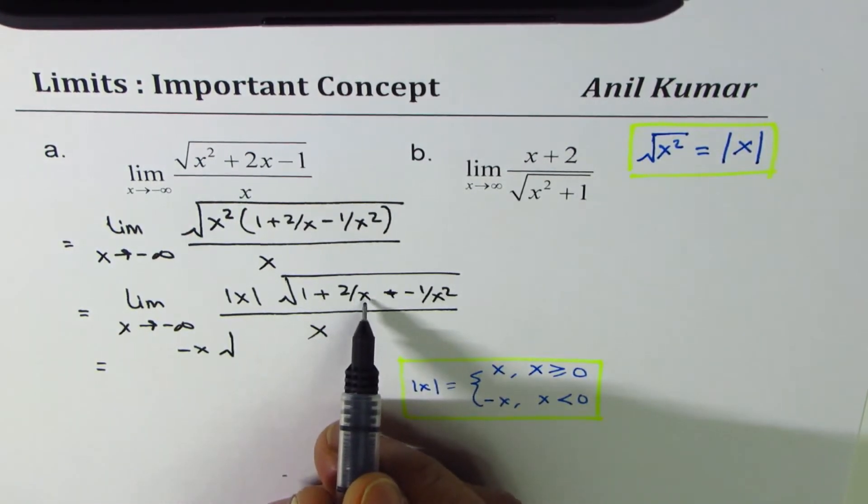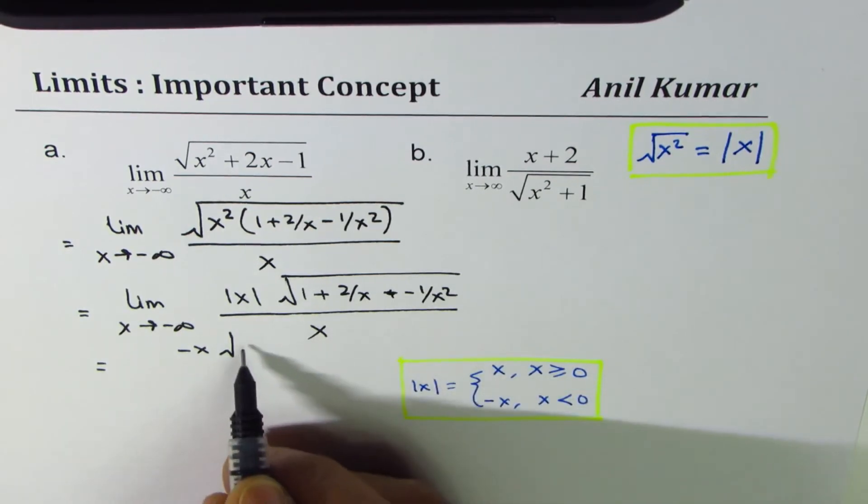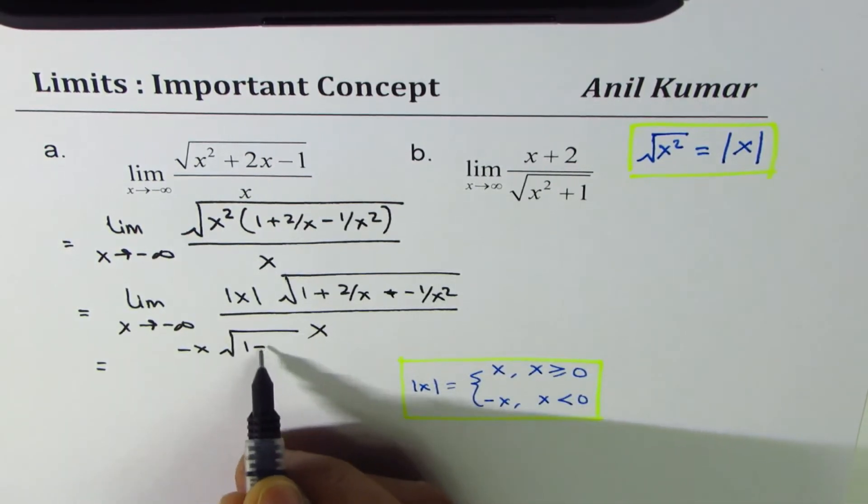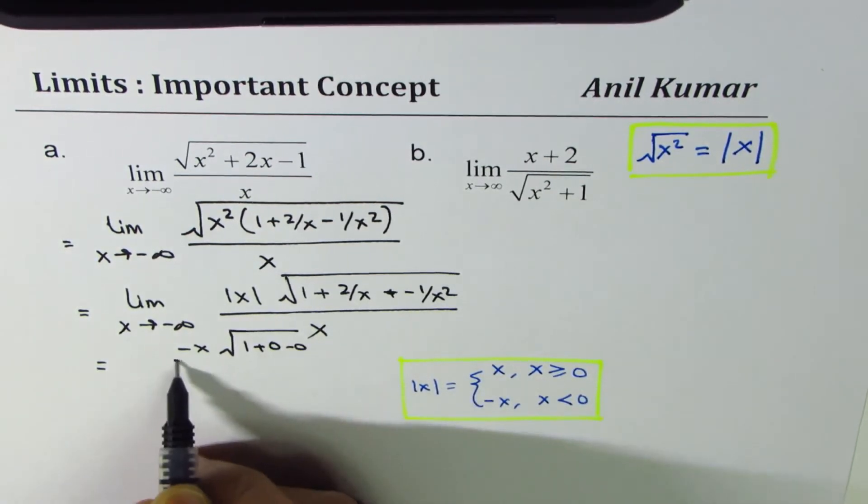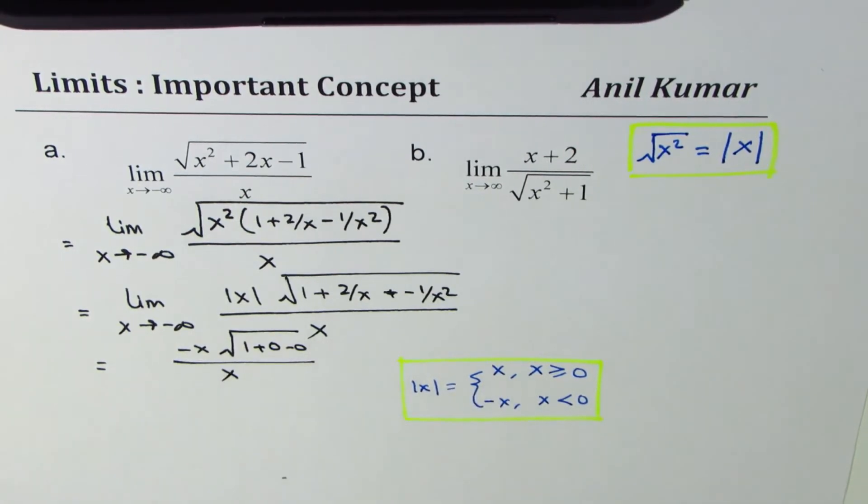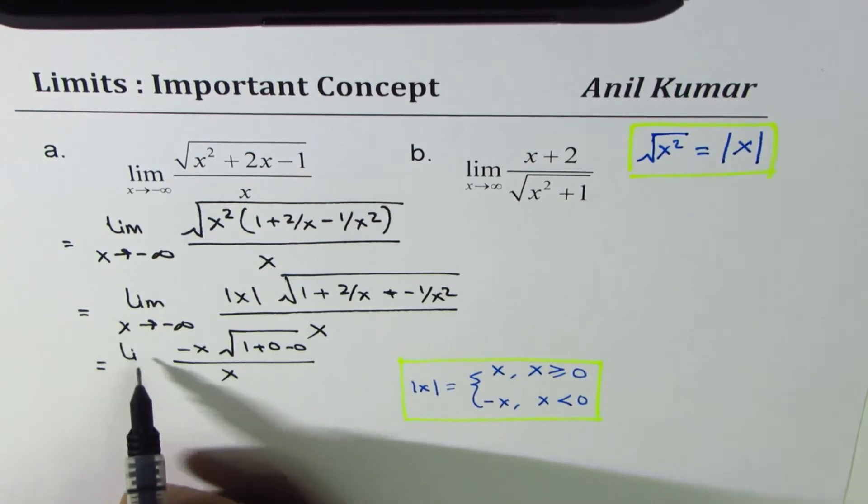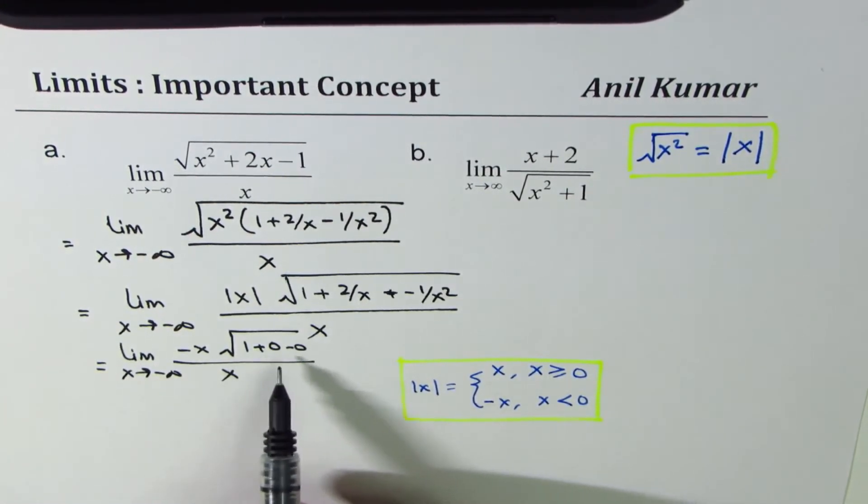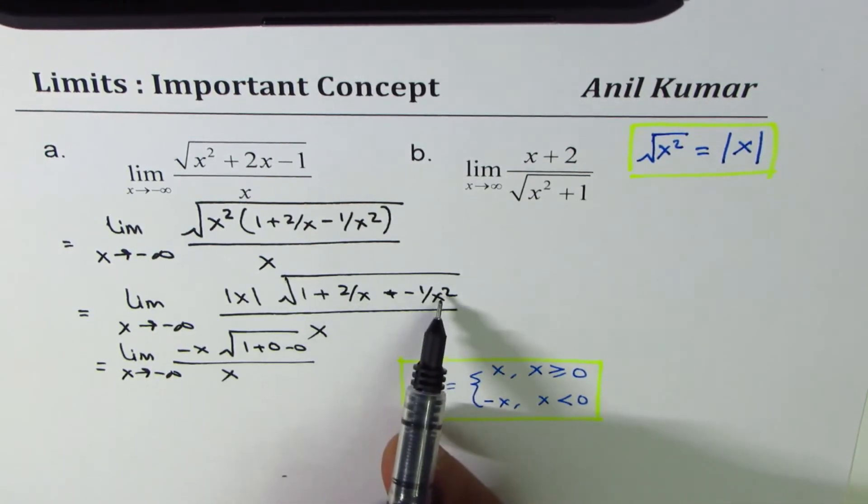And within the square root, if I write x as a very large number, all these numbers are zero. So basically it's one plus zero minus zero divided by x. So when you're approaching minus infinity, let me write limit x approaches minus infinity. In that condition, these values are approaching zero.